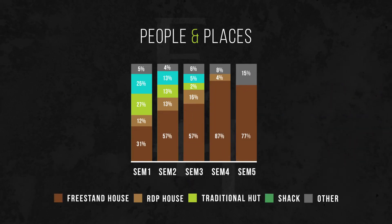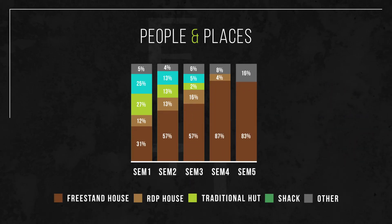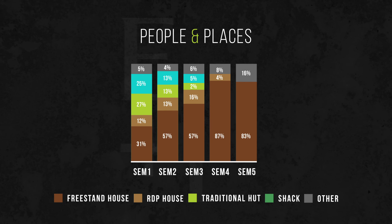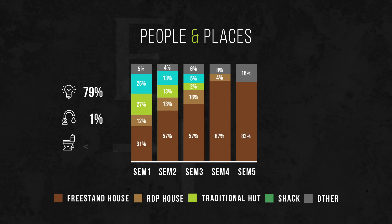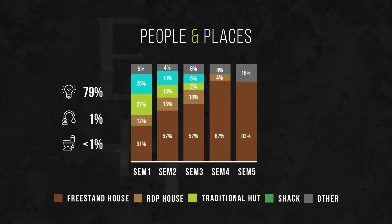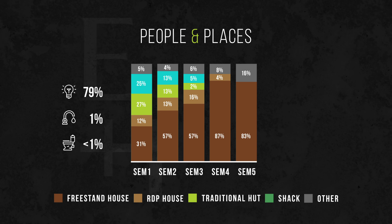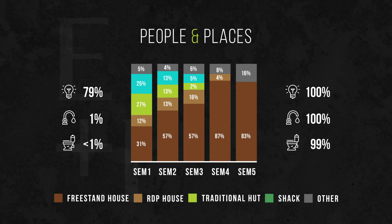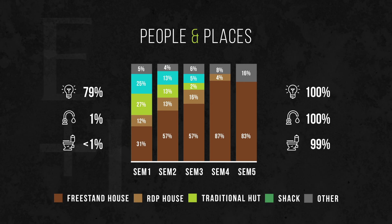Households are predictable. At the top end of the market, people live in freestanding homes, and the role of RDP houses is self-evident. But the real story is told by variables like flushing toilets and running water in the home. Only 1% of cluster 1 households have running water, and less than 1% have a flushing toilet. The lifestyle implication of that, compared to the 100% saturation at the top end of the market, is tragically obvious.